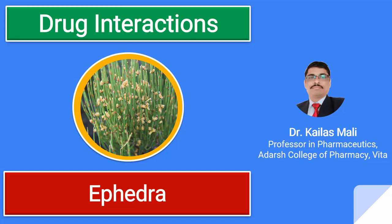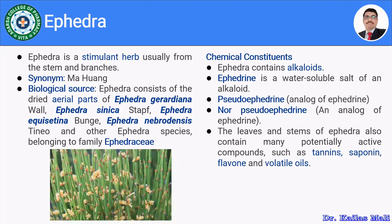Ephedra is a stimulant herb usually derived from the stem and branches. Mainly we are using the aerial parts of ephedra for medicinal purposes. In the US market, ephedra and ephedra-related products are banned due to serious and potentially lethal side effects.